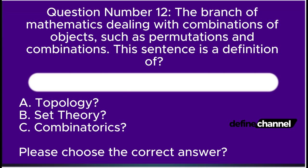Question number twelve. The branch of mathematics dealing with combinations of objects, such as permutations and combinations. This sentence is a definition of: A. Topology, B. Set theory, C. Combinatorics. Please choose the correct answer.